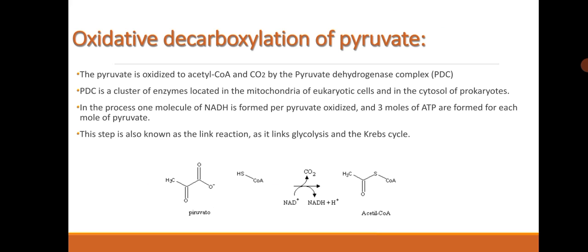Oxidative decarboxylation of pyruvate. The pyruvate is oxidized to acetyl-CoA and CO2 by the pyruvate dehydrogenase complex, PDC. This PDC is a cluster of enzymes located in the mitochondria of eukaryotic cells and in the cytosol of prokaryotes. In the process, one molecule of NADH is formed per pyruvate oxidized, and 3 molecules of ATP are formed for each molecule of pyruvate. This step is also known as the link reaction as it links glycolysis and the Krebs cycle.